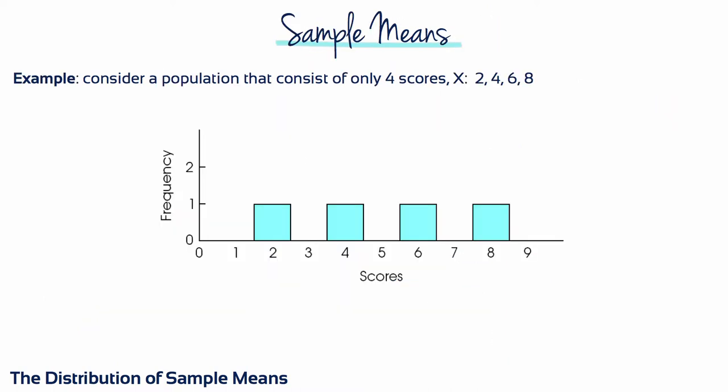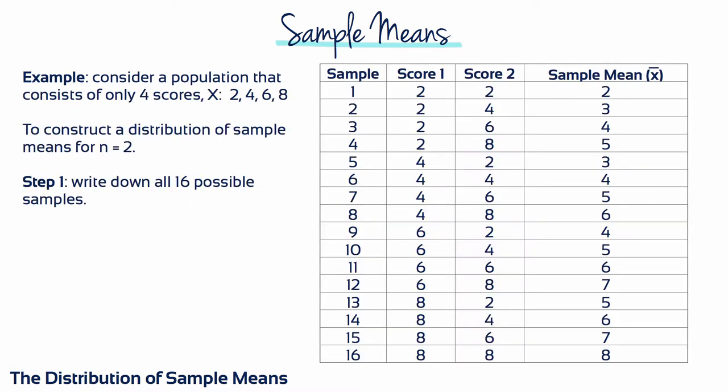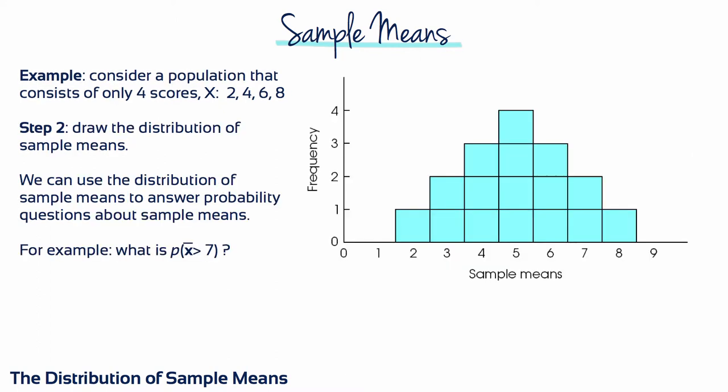To illustrate this, let's consider a population that consists of only four scores: 2, 4, 6, and 8. We're going to use this population as the basis for constructing the distribution of sample means for n equals 2. For this example, there are 16 different possible ways to choose two values from this population of four scores. They're all listed in this table, along with the sample means for each of the 16 different possible samples. The 16 means can then be placed in a frequency distribution histogram.